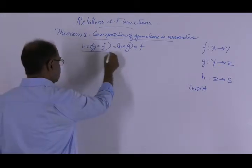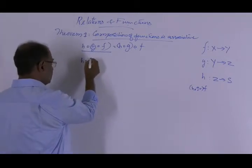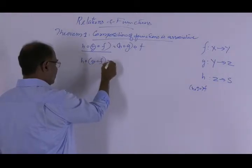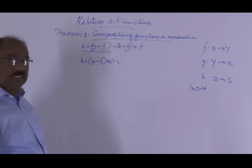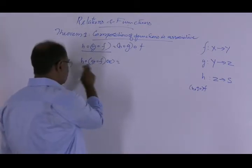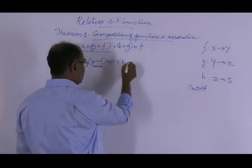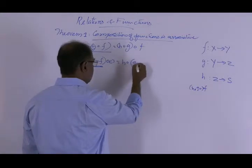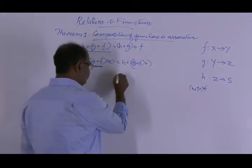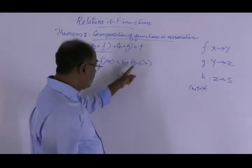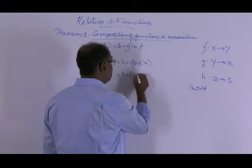For this, consider first h∘(g∘f). h∘(g∘f) of x, for any element x in capital X, is equal to — consider (g∘f) as a single function. So by the definition of composition of functions, this is h of (g∘f)(x), which is equal to h of g(f(x)).